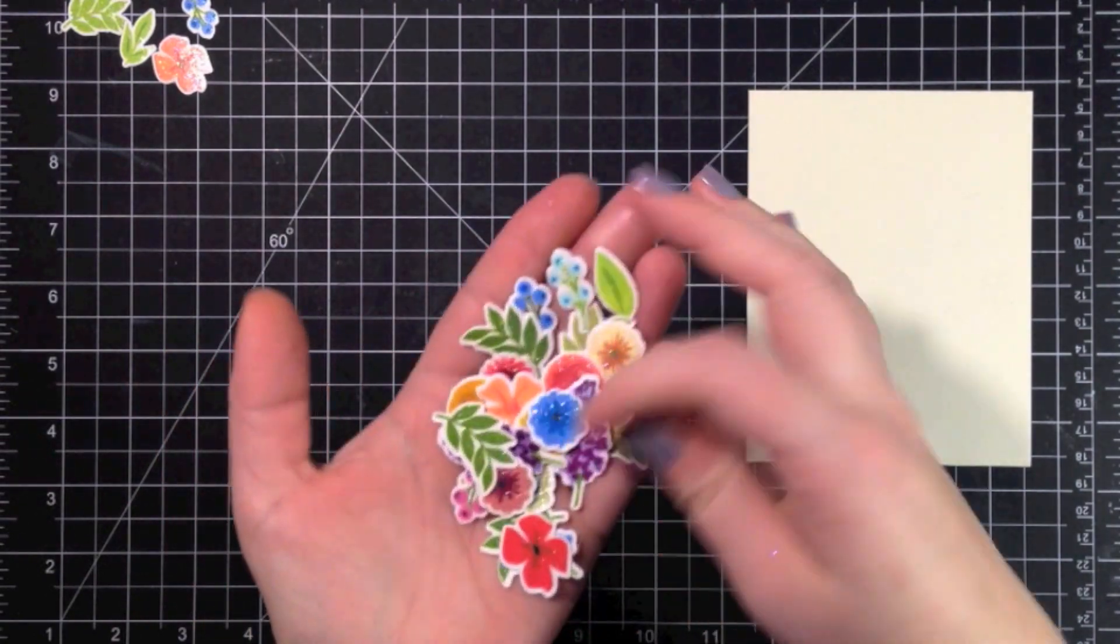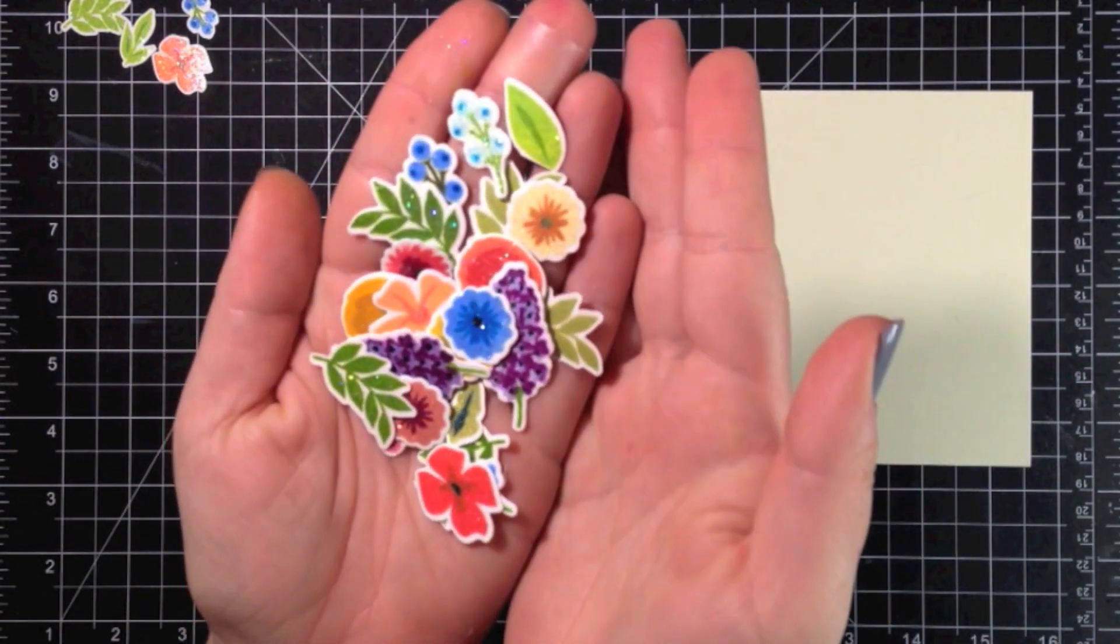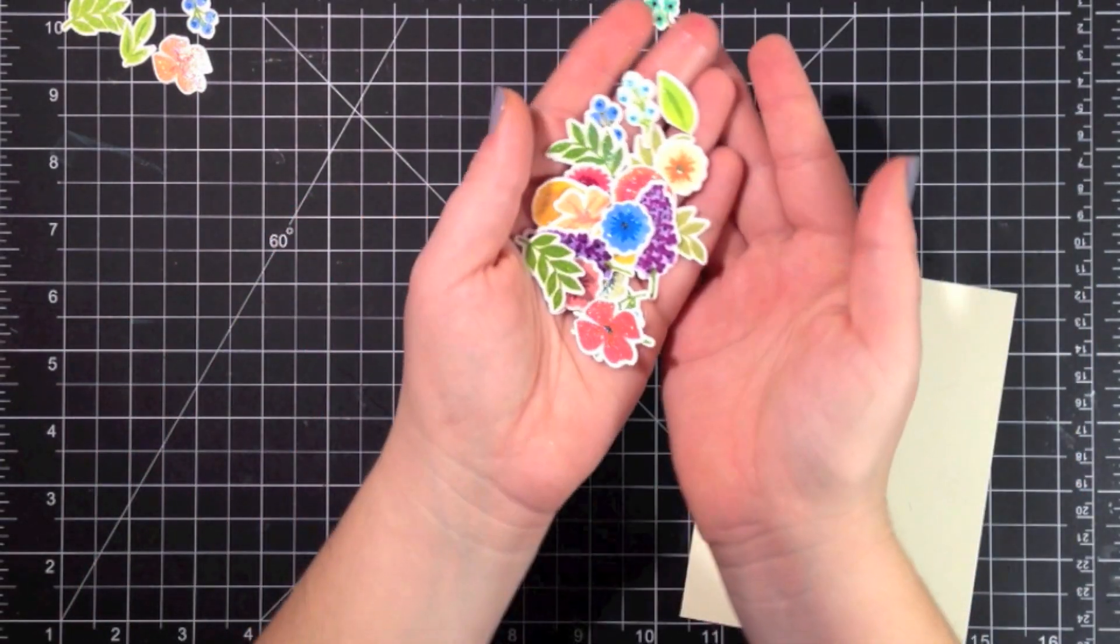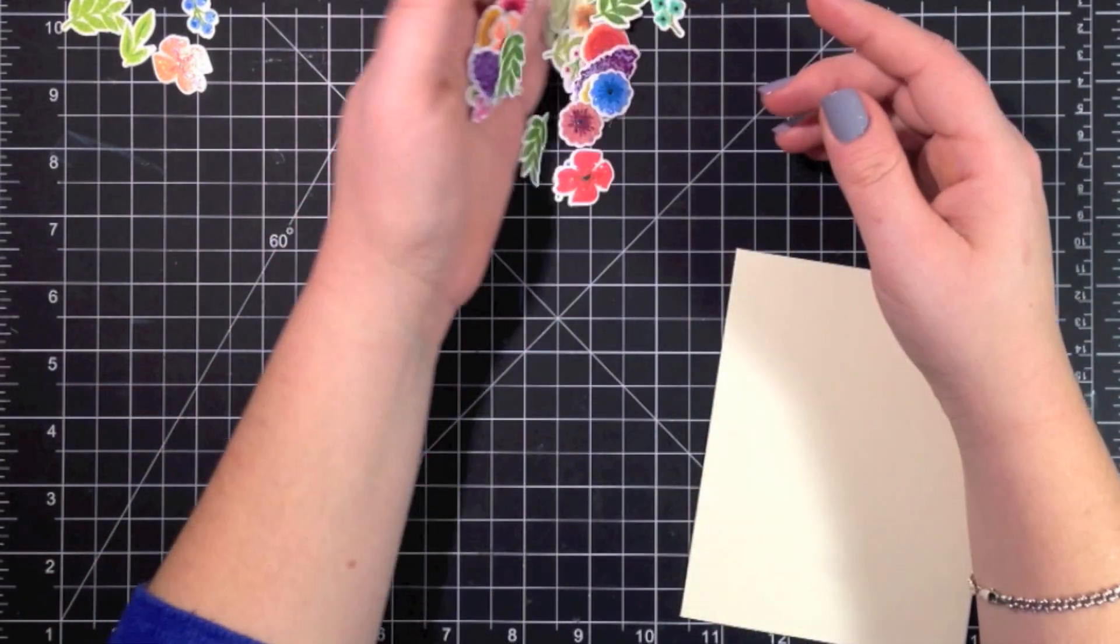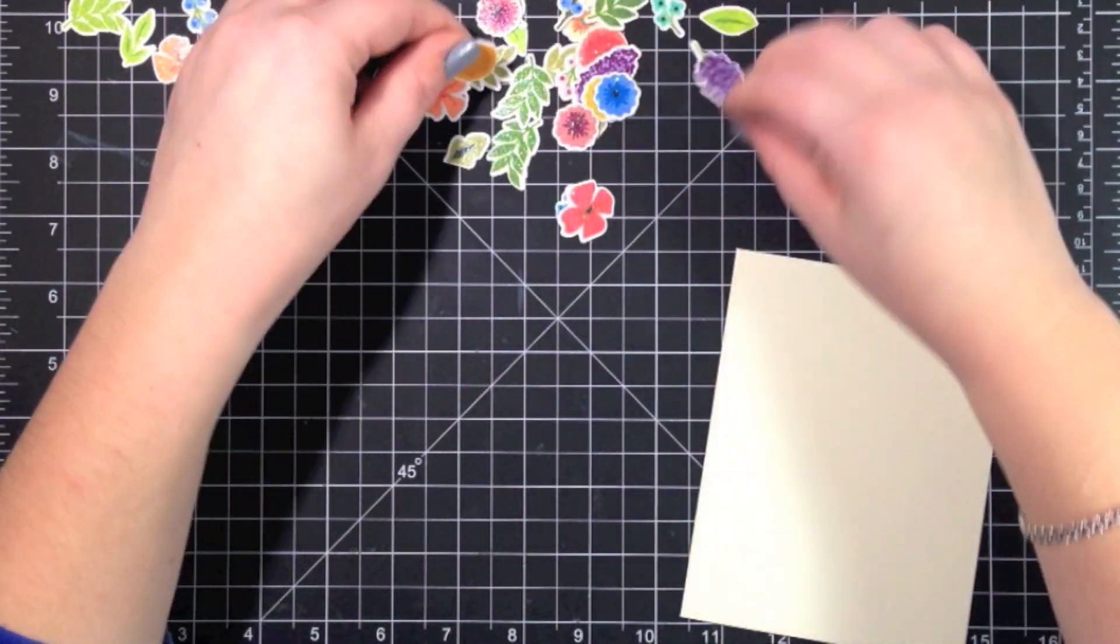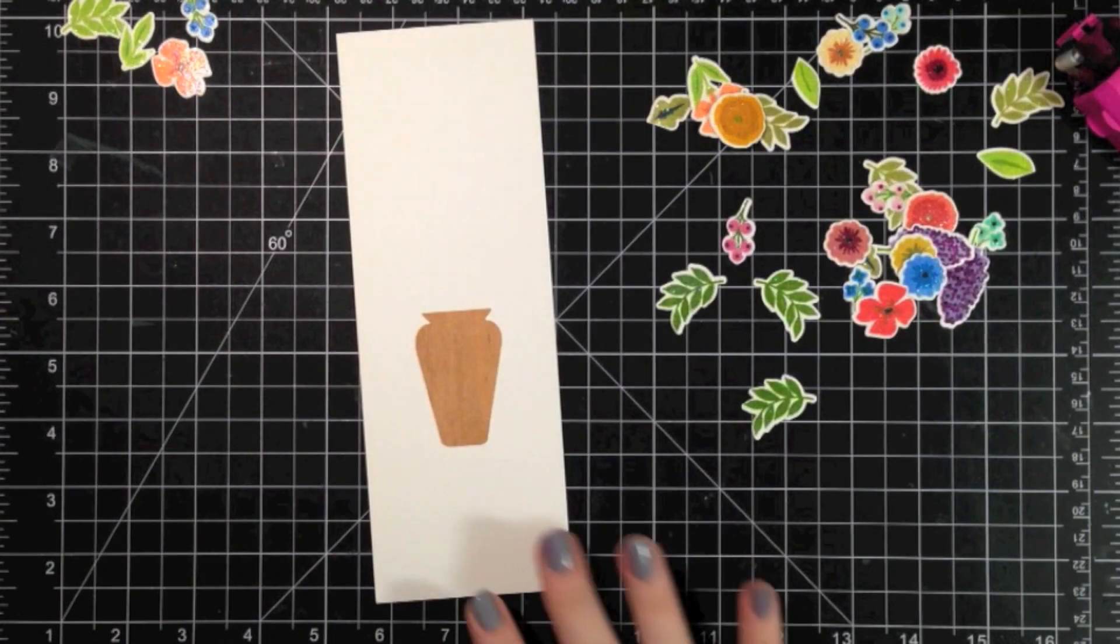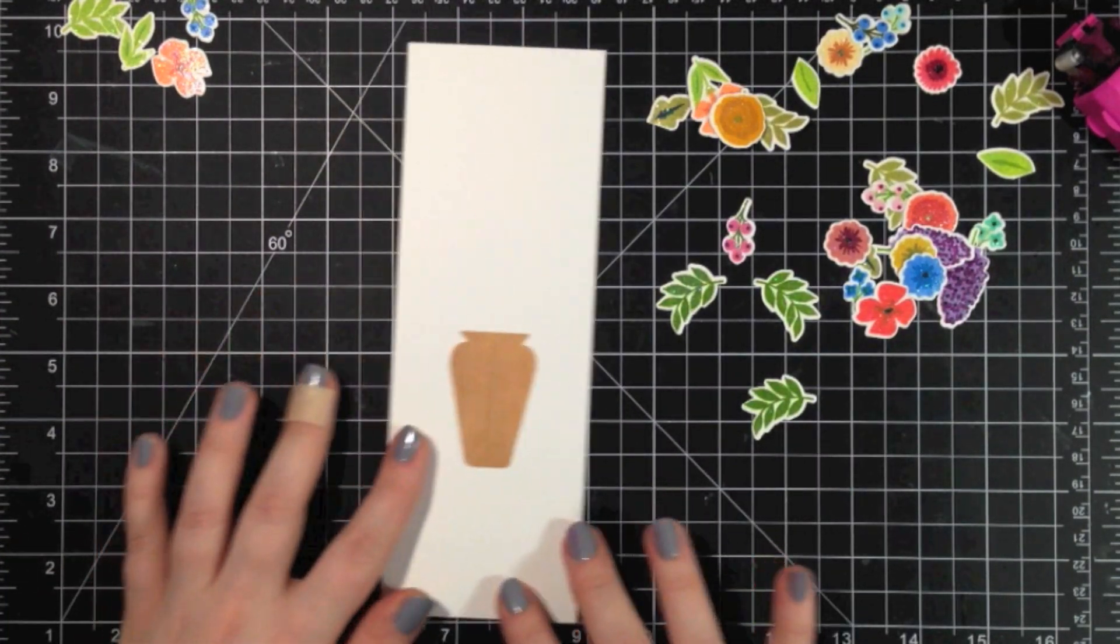So rather than show you me doing all of these different flower images, I went ahead and stamped a whole bunch of them off camera. I've already embossed them all with the sparkle embossing powder. You can probably see it as they move in the light there, the shimmer that's all over those flowers. Every single one of them has been completely embossed with the embossing powder.